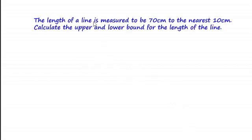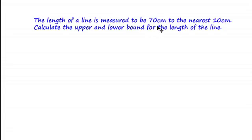Let's have a look at this question. The length of a line is measured to be 70 centimetres to the nearest 10 centimetres. Calculate the upper and lower bound for the length of the line. We're told that the length of the line is 70 centimetres — that means 70 centimetres is the estimated or rounded value. There are several different values the length could have been before it was rounded up or down to 70 centimetres.